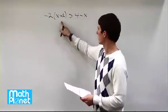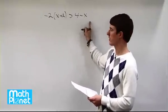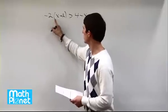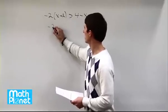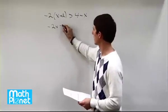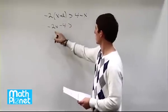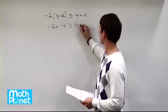So we first need to expand this bracket here. We can't simplify this side at all, so we'll just do that. Negative 2 times x is negative 2x. Negative 2 times positive 2 is negative 4. So that quantity is greater than 4 minus x.